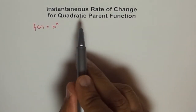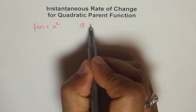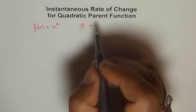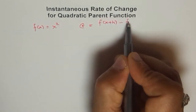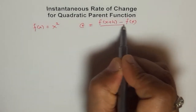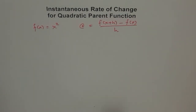How do we find the instantaneous rate of change? We use this formula: f(x+h) minus f(x) over h. This is the difference quotient method by which we find the instantaneous rate of change for most of our parent functions. We will use this to find in general what is the instantaneous rate of change for a quadratic parent function.